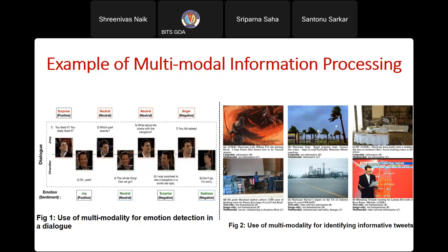Twitter data is multimodal — full of images and text. In disaster situations, people upload images of the current situation. From those images we can classify posts into relevant and non-relevant categories. All relevant posts can then be summarized and the summary given to the rescue team, which can plan the rescue operation. We have applied multimodal summarization to disaster management in this way.